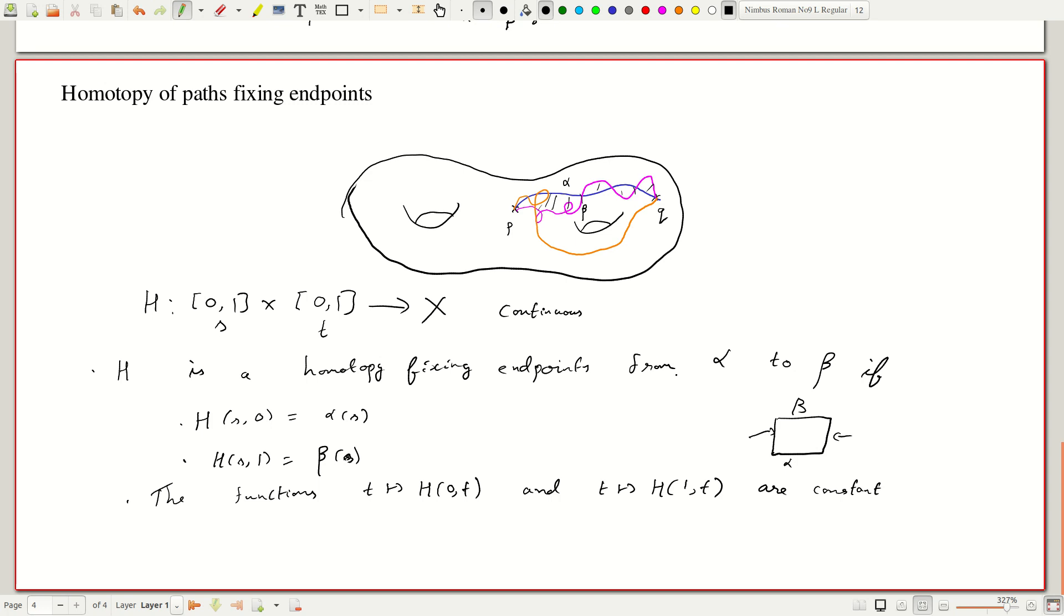This is a homotopy fixing endpoints and we will say alpha is homotopic to beta fixing endpoints if there exists H as above. This is the precise definition. We say two things are homotopic if there is an H, that H is called a homotopy. It is a path of paths but we have avoided trying to have a topology on the path space by simply thinking of it as a function of two variables that will let things happen quite easily.